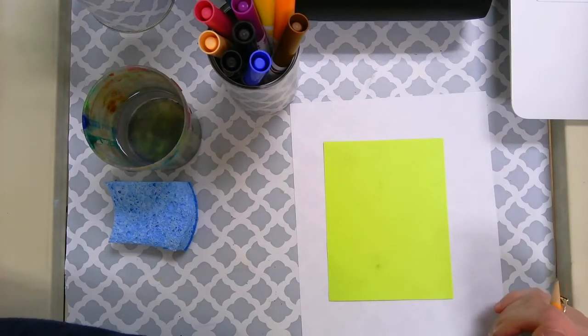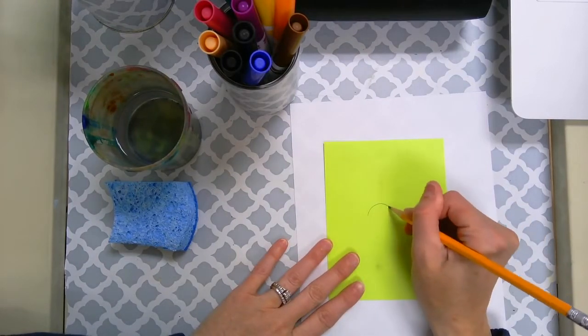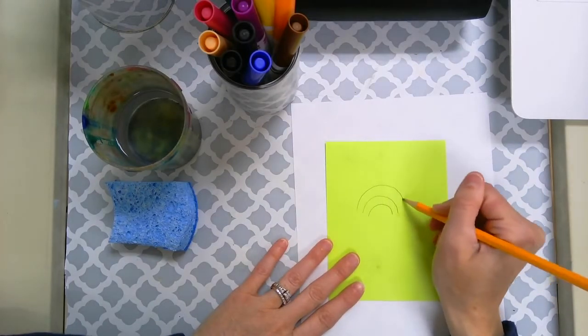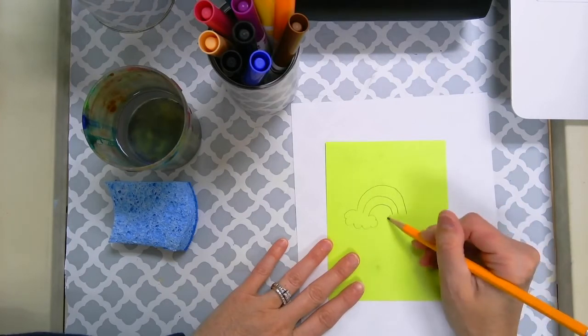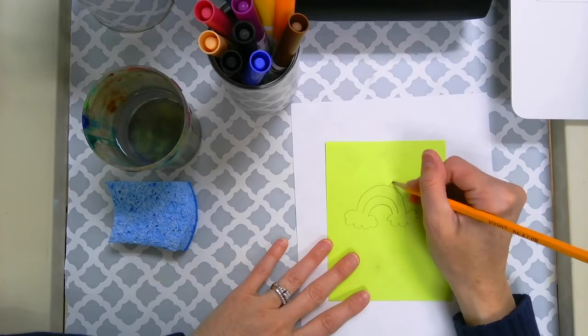So I think what I'm going to do, I really like rainbows, so I'm going to create a rainbow. And so first I'm just going to kind of sketch out what I might like. And then maybe a little sunshine behind it.